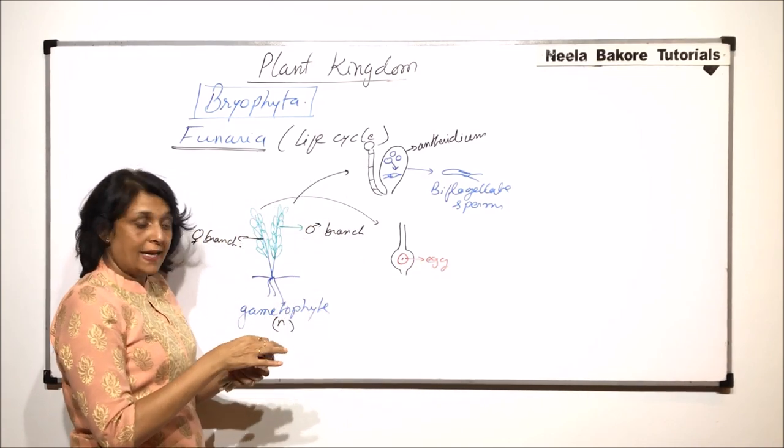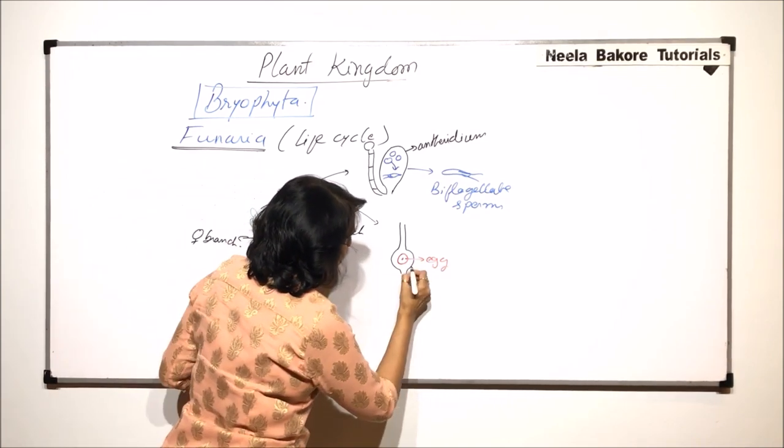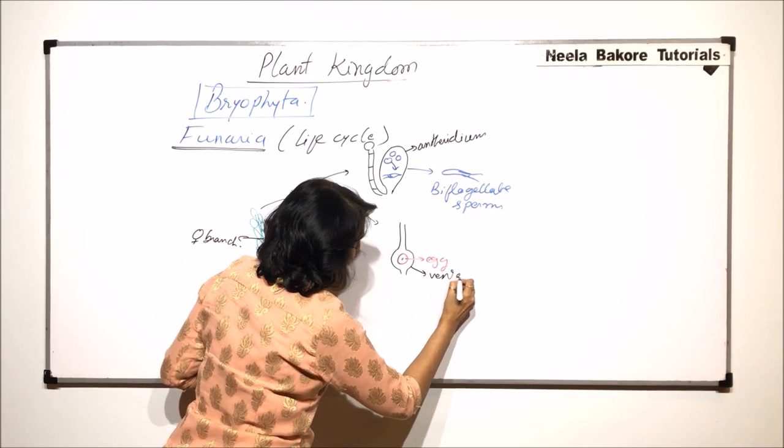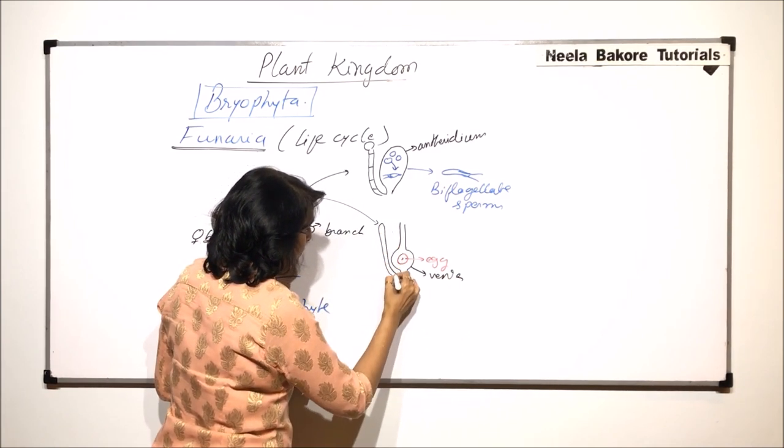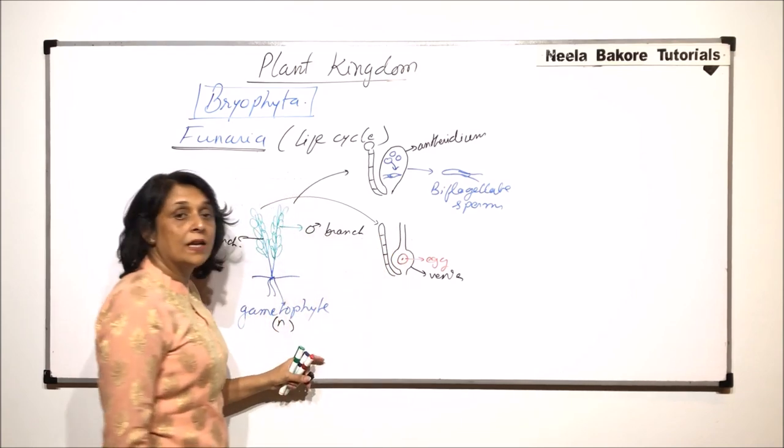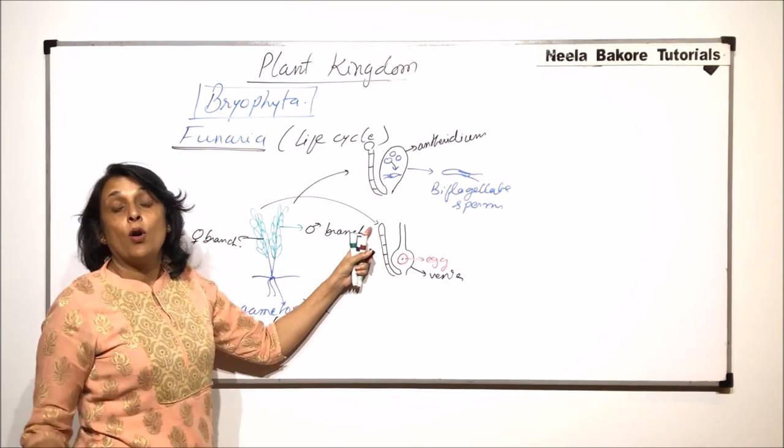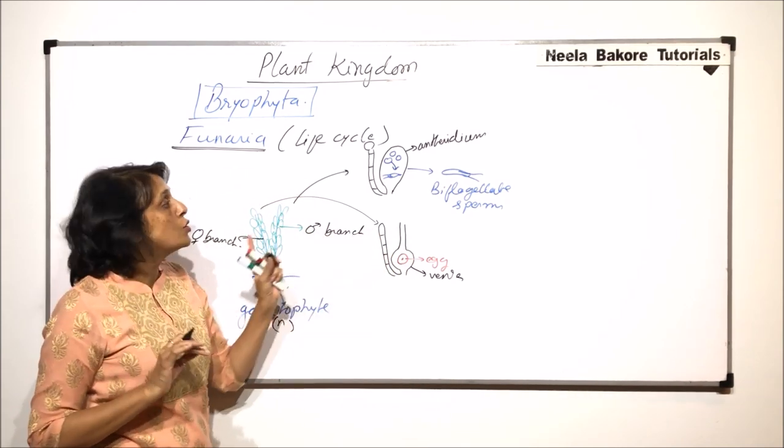And it is present in the venter. So this swollen structure was the venter. And here also we made those paraphysis. And if you remember we made them multicellular, but the tip or the terminal cell was not swollen.